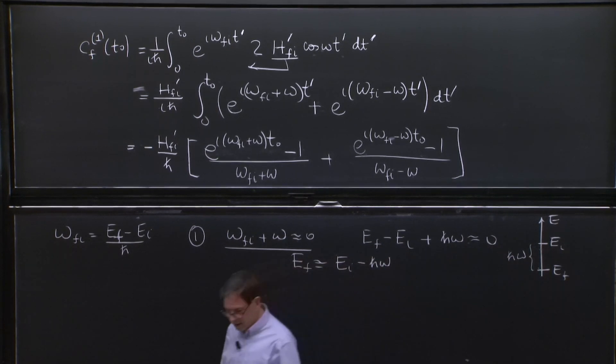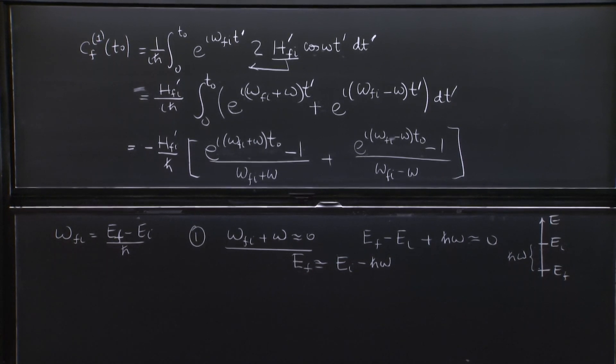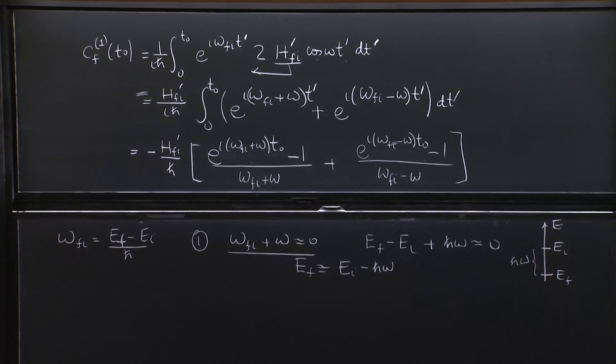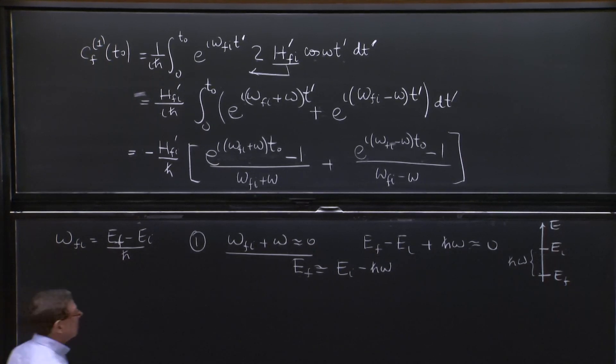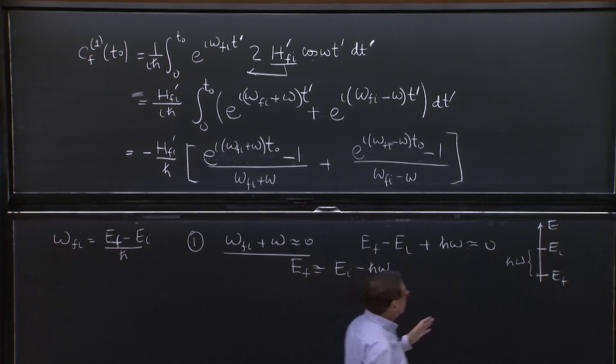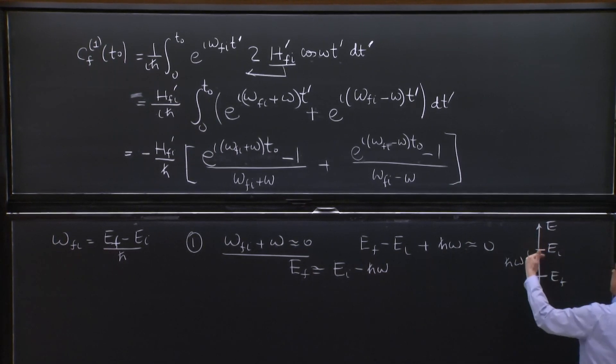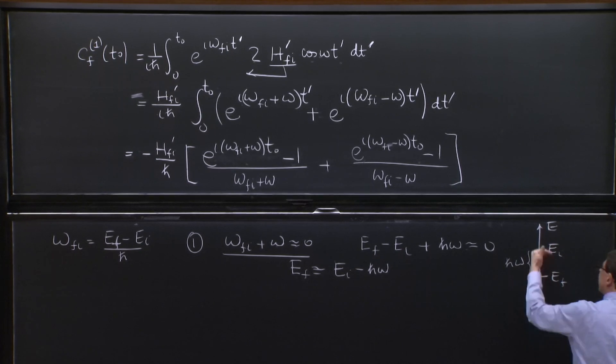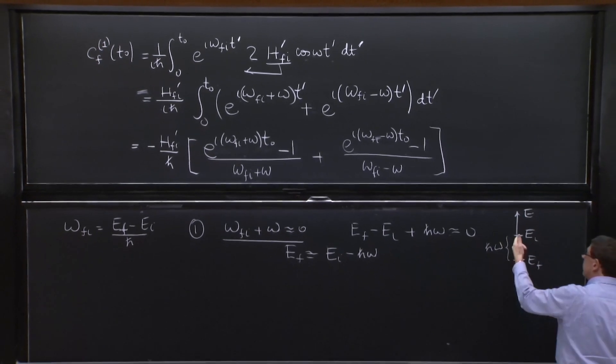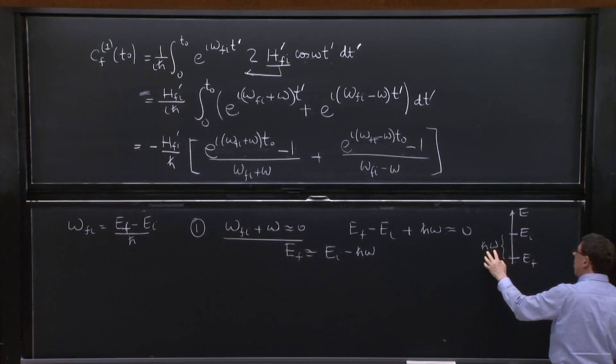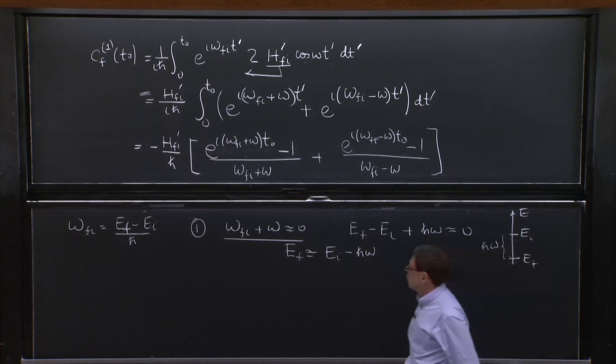So what is this process? This process is called stimulated emission. And why is that called stimulated emission? Because you're going from a state of energy EI to a state of energy EF that has lower energy. In that process, you're releasing energy h bar omega to the perturbation.